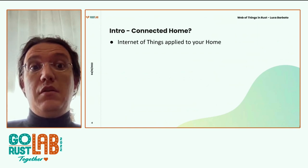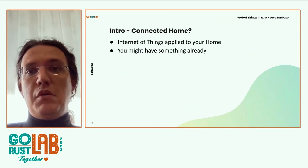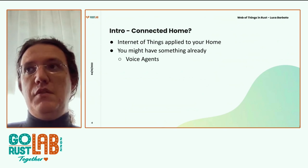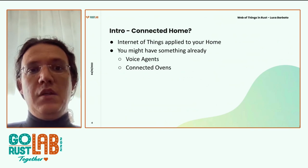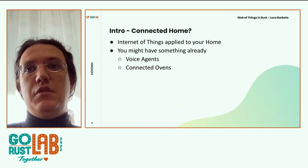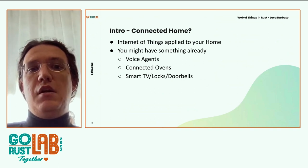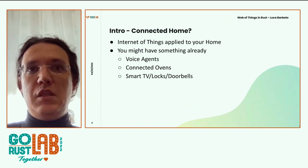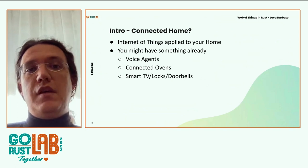First, what is a connected home? The Internet of Things applies to your home. You probably already have something like voice agents — Siri, Google, Alexa. Those are one cornerstone. Connected ovens or any kind of connected appliance, smart TVs, smart locks, and smart doorbells are all internet-of-things connected things.